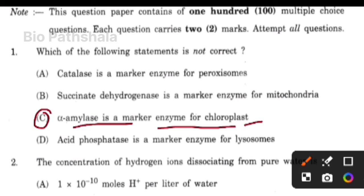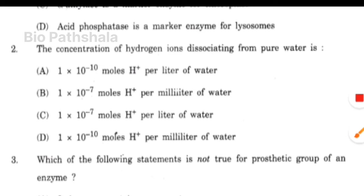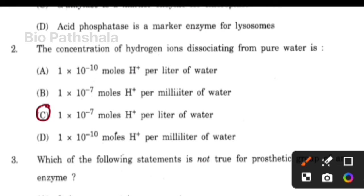Next question: the concentration of hydrogen ion dissociating from pure water is option number C, i.e., 1 × 10⁻⁷ moles H⁺ per liter of water.